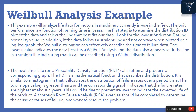The next step is to run a probability density function (PDF) calculation and produce a corresponding graph. The PDF is a mathematical function that describes the distribution — similar to a histogram in that it illustrates the distribution of failure rates over a period of time. The B or slope value is greater than 1, and the corresponding graph indicates that failure rates are highest at about 2 years. This could be due to premature wear, and a thorough root cause analysis (RCA) should be completed to determine the cause of failures and work to resolve the problem.